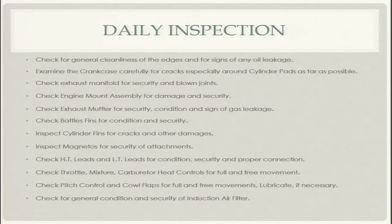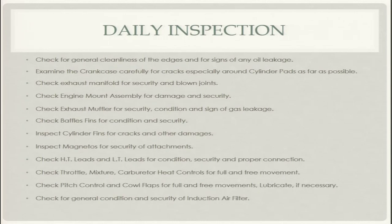Second, examine the crankcase carefully for cracks, especially around cylinder pads as far as possible. Next is the inspection of the exhaust manifold for security and blown joints. We need to check that the exhaust system — the exhaust tubes, the exhaust manifolds — are secured properly, with no loose bolts, loose nuts, and that all cotter pins are in place and there are no blown joints or leakage around the joints.